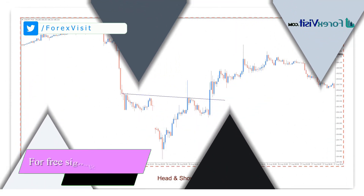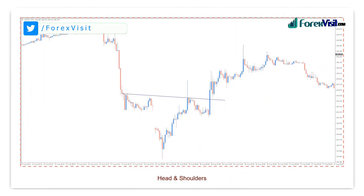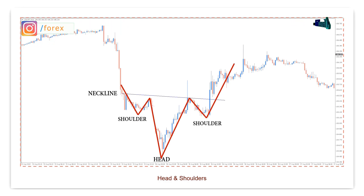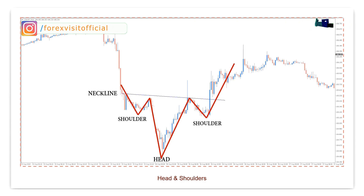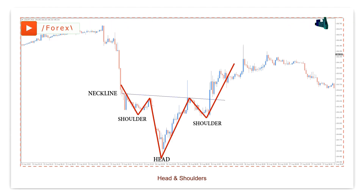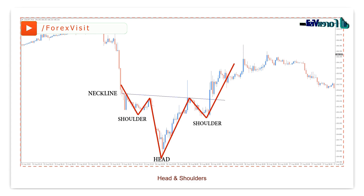Another bearish example of the head and shoulders formation: left shoulder, head, right shoulder, then a breakout. A lot of traders will search for head and shoulders formations at every stage of a trend. But if you want a high-probability trade, you should look for a head and shoulders formation at the middle to ending stages of the trend — early stages won't offer a decent probability.